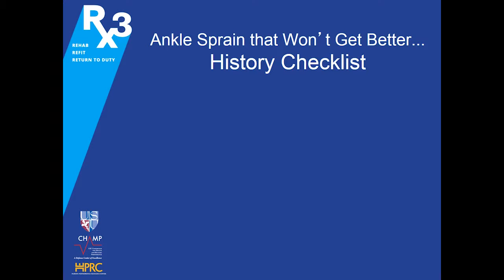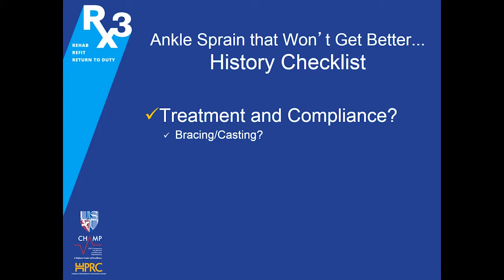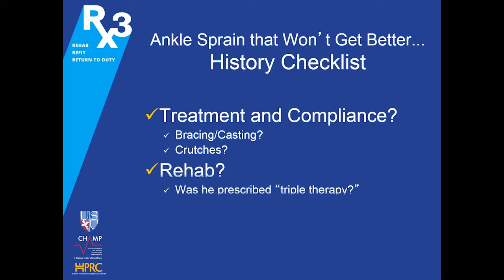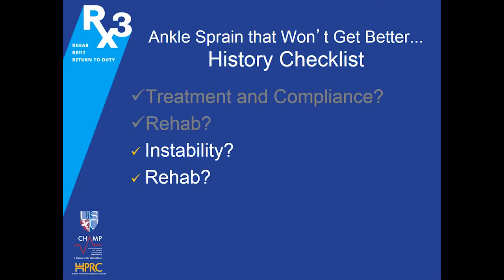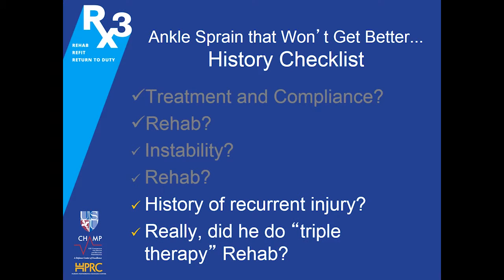Tell him to come back in six weeks if still painful. Six weeks later he returns — status post ankle sprain, seven weeks ago — still complaining of lateral ankle pain that occasionally swells and hurts with activities. Now what do you do with the ankle sprain that won't get better? Use a history checklist: make sure they've been compliant with treatment. Have they done their rehab? Did they wear their brace? Were they on crutches? Was triple therapy rehab prescribed and did they actually do it? Can they demonstrate it for you?